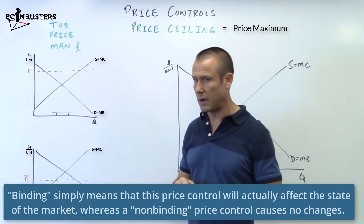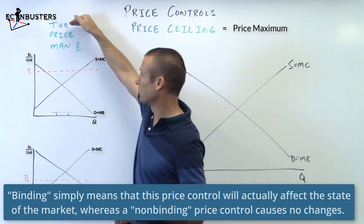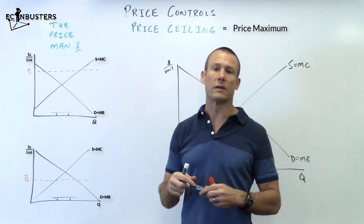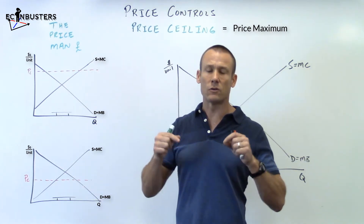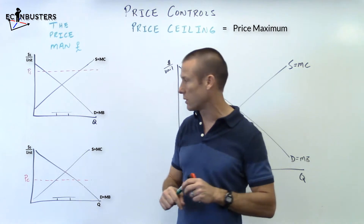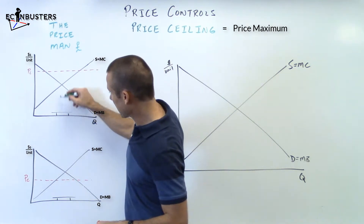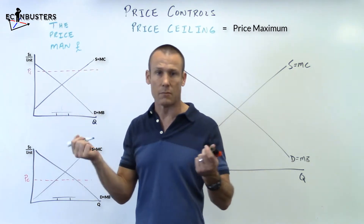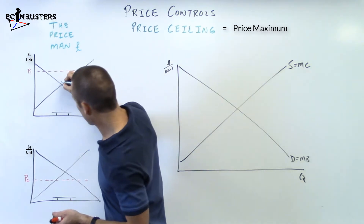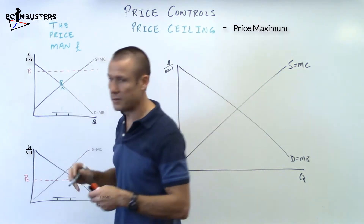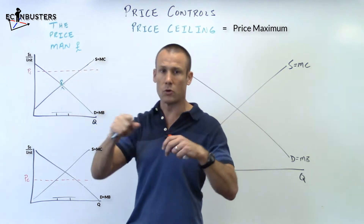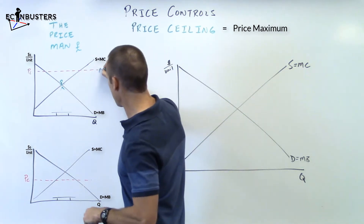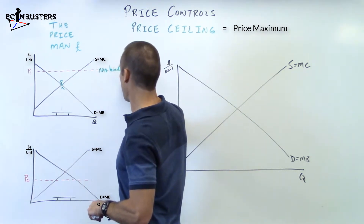Which one is binding and which one is non-binding? To understand this, I want to introduce you to the price man. I've got this little trampoline right here. The price man wants to get to that market clearing price, the price equilibrium. So the price man is jumping on the trampoline, and the question is: can he get to the market clearing price? Right there, no problem — the answer is yes. He jumps up, hits it, boom, he's done. This price ceiling is non-binding; it is not impacting the price man at all.